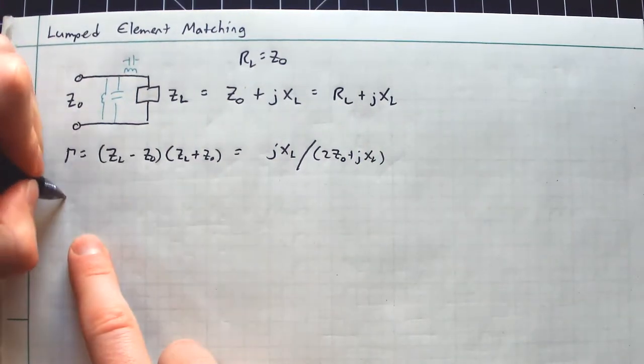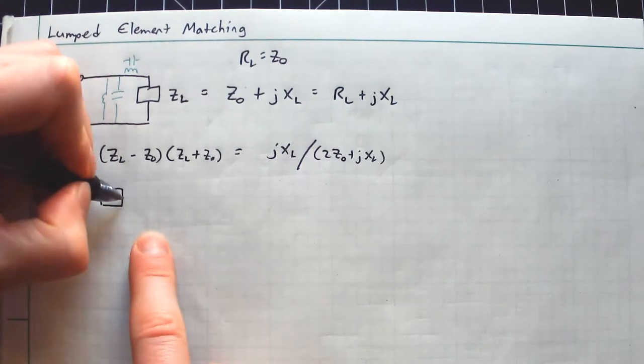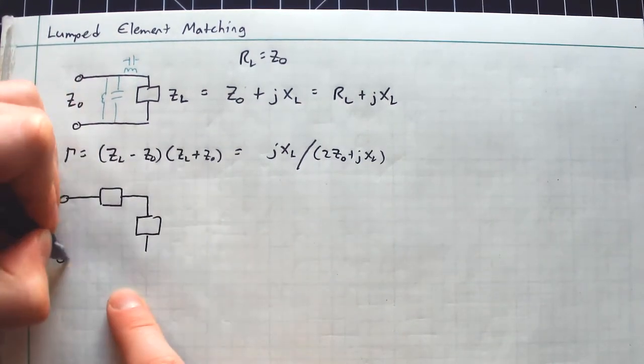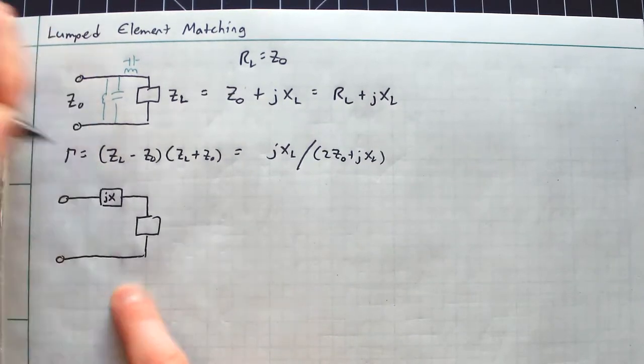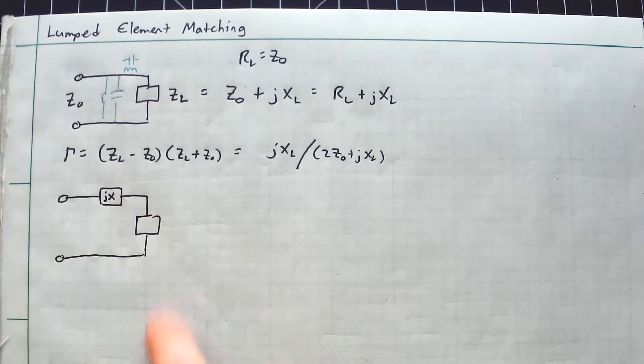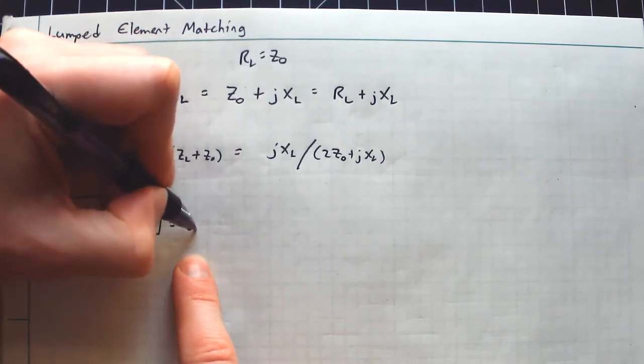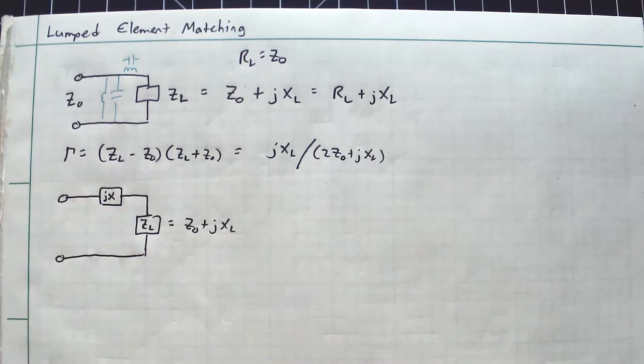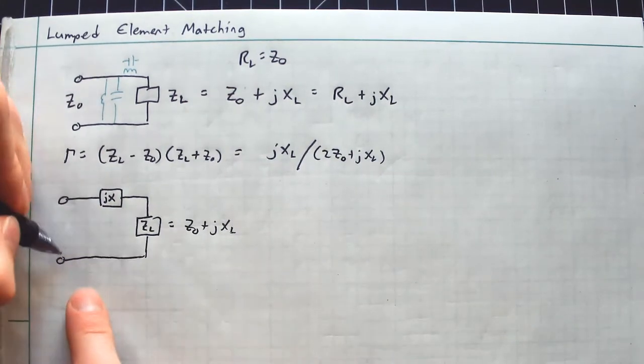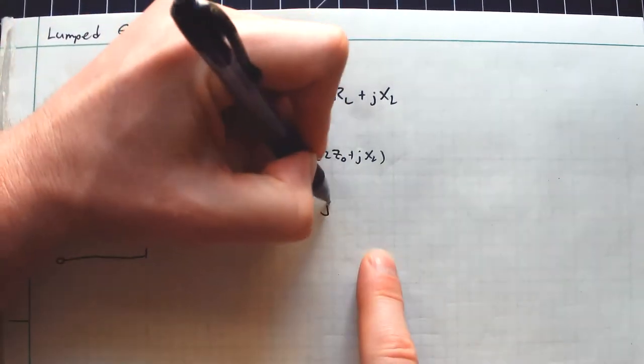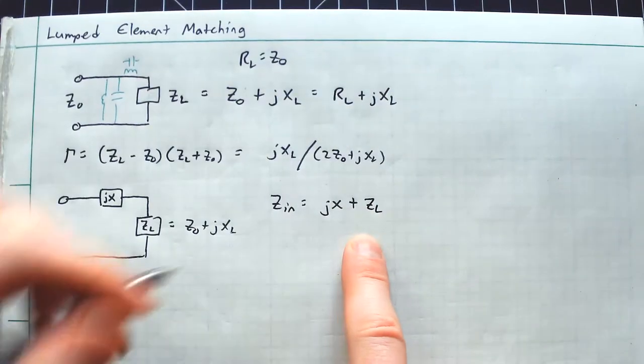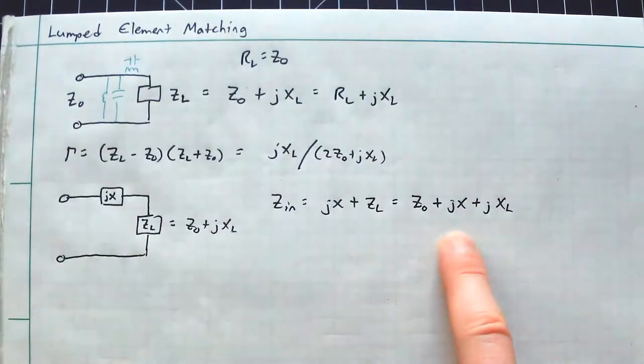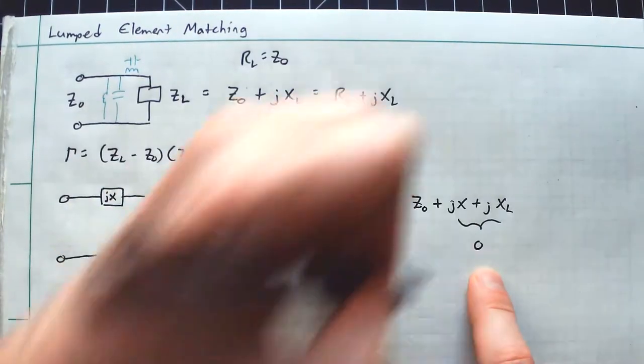Let's start with a simple example of a series element here. So it could be a capacitor or an inductor or a resistor, who knows, but we're going to write it like the following. I'm going to just write some jX here for some mysterious element that I'm going to stick here. And then this will be Z sub L, which is again Z0 plus jX sub L. So you'll notice the total series impedance looking in here, Zin is going to be jX plus ZL, which will then evaluate to Z0 plus jX plus jXL. So if I want to create a match, I want these guys to evaluate to zero.